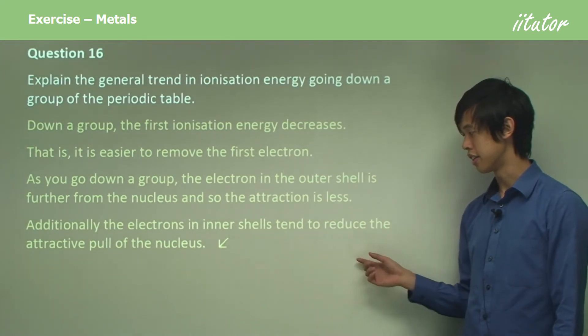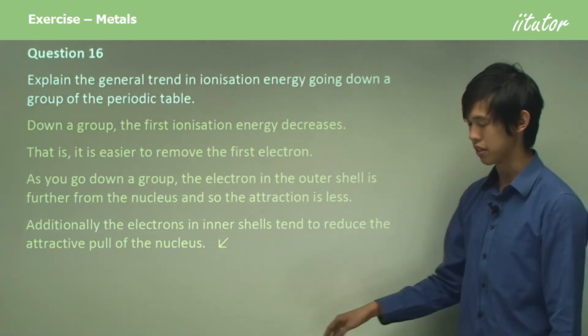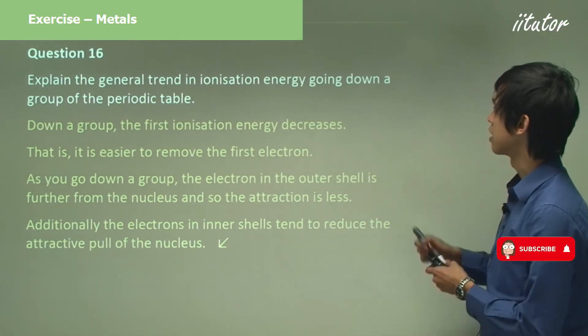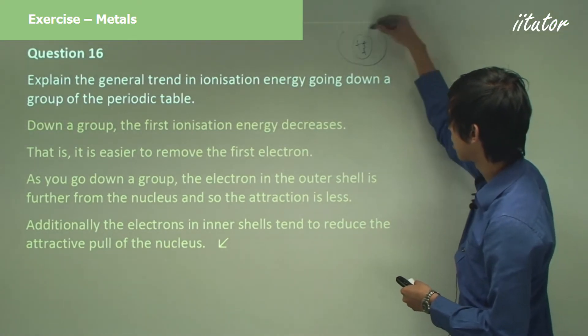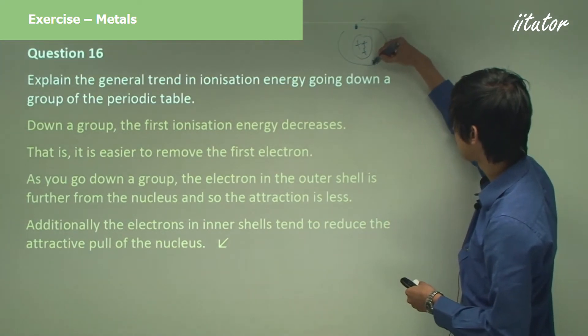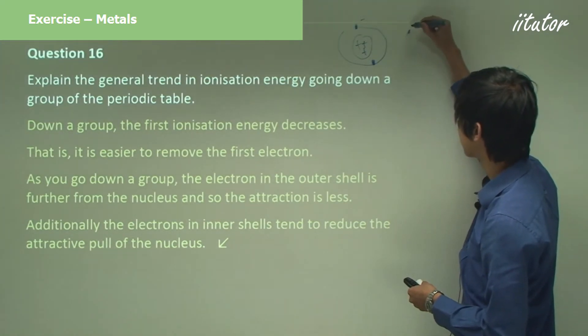Additionally, the electrons in the inner shells tend to reduce the attractive pull of the nucleus. So what happens is you've got your nucleus here and you've got your electrons - let's say you've got two electrons here and then another electron in here.